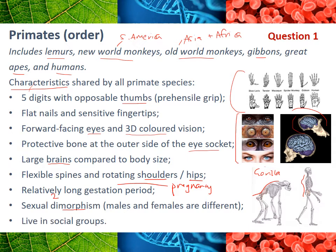The last really important characteristic of all primates is that we live in social groups. When we look at human evolution you'll see that we live in social groups to a greater extent, but all primates do live socially in groups. Make sure you've got some notes written down on those, then jump into the Google quiz and answer question one, which relates to this section.